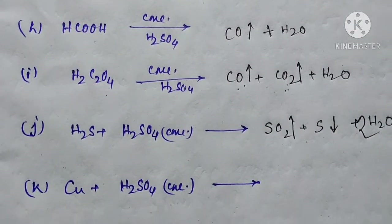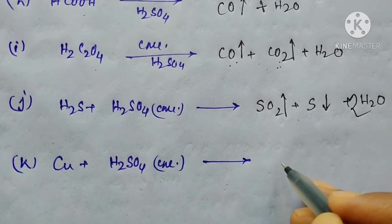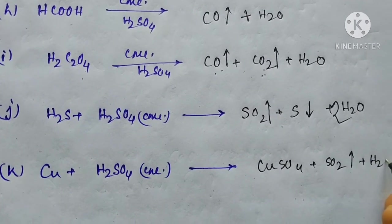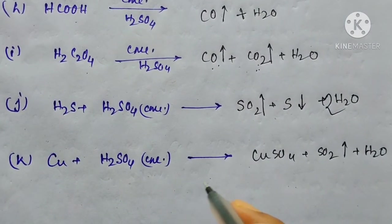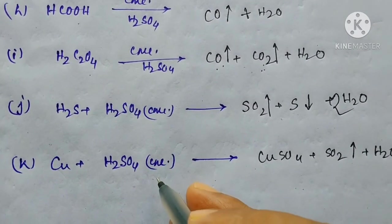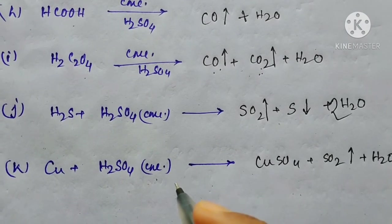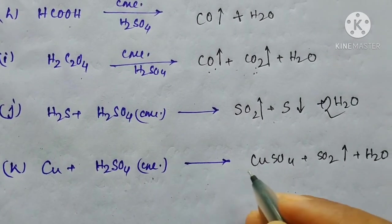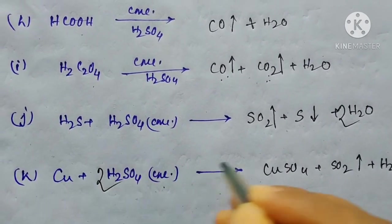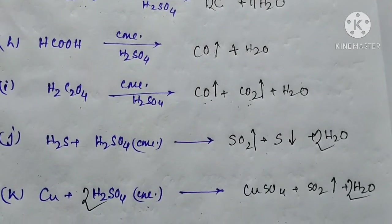The final reaction is copper plus concentrated sulfuric acid, which produces copper sulfate, sulfur dioxide as gas, and water. No hydrogen gas is produced because it is concentrated sulfuric acid and copper is situated below hydrogen in the reactivity series, so it produces only sulfur dioxide as gas. Balancing gives you 2 and 2.